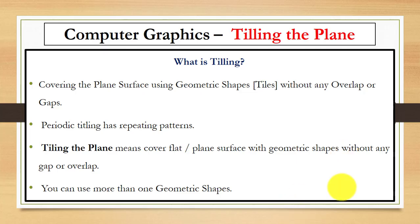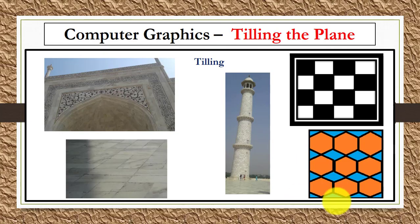We can use more than one geometric shape to cover the plane surface. For example, you can see here we have different examples of tiles. In the real world, you can see the tiles on the floor or in the kitchen.